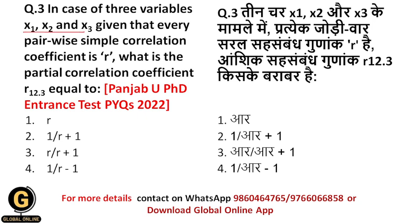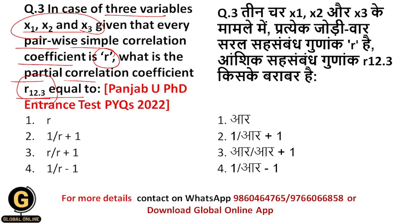In the case of three variables x1, x2, and x3, given that every pairwise simple correlation coefficient is r — what is the partial correlation coefficient r12.3 equal to? Here it is given that we have three variables x1, x2, and x3. If the pairwise simple correlation coefficient is denoted by r, then with these three variables, what does the partial correlation coefficient r12.3 equal? Is it r, 1/(r+1), r/(r+1), or r/(r−1)? Now let us see the concept behind this.